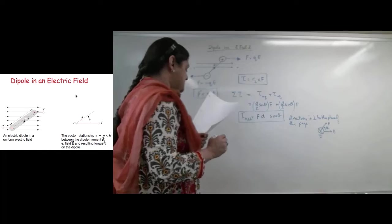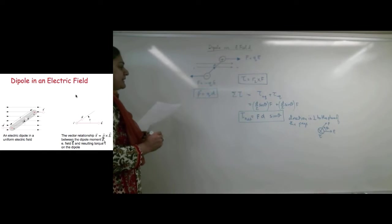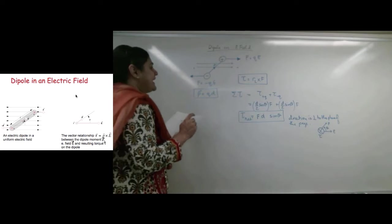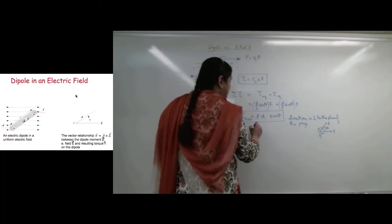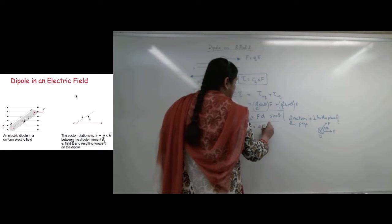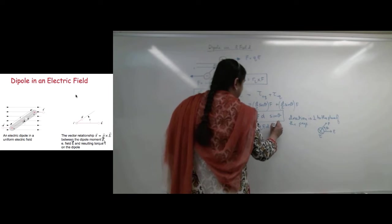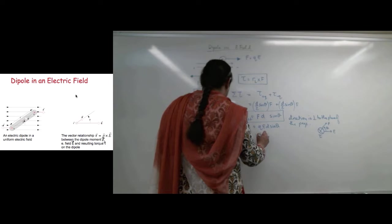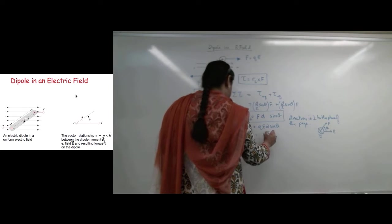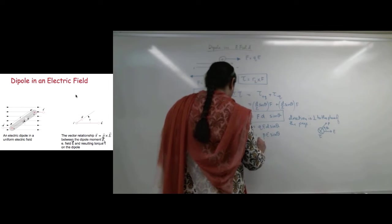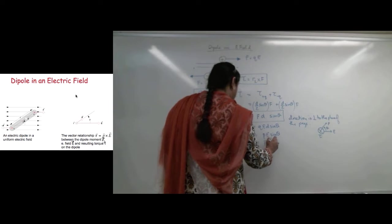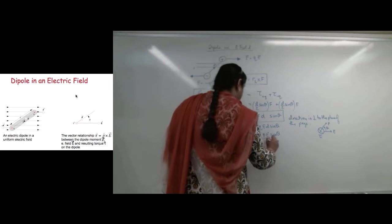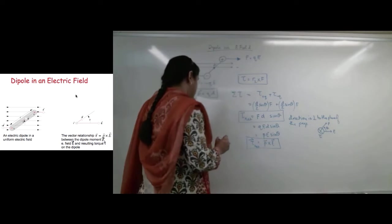That's my torque, just so you know. Now, what else? My F I know is equal to QE, so I can put in QED sine theta, which means I can combine these two together, so I will get a PE sine theta. Or, in vector form, net torque will be equal to P cross E.